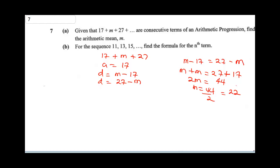Knowing that our M is 22, therefore, our AP is going to be 17 plus 22 plus 27. Now you can see that the common difference is 5. So D is 5. This is what our AP looks like.